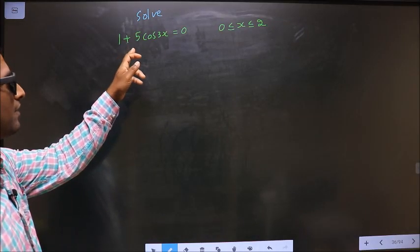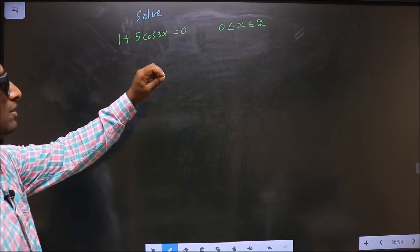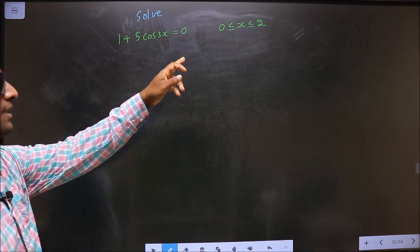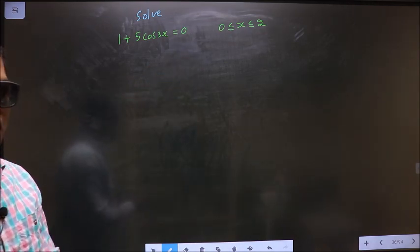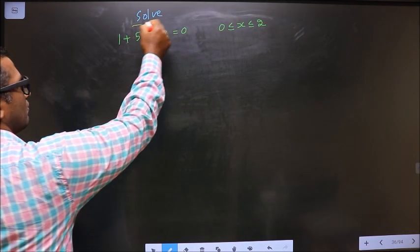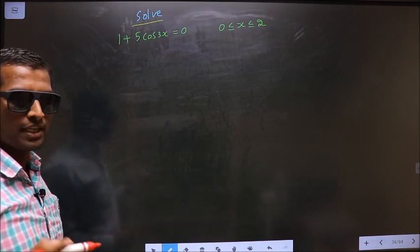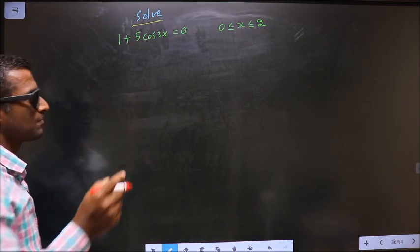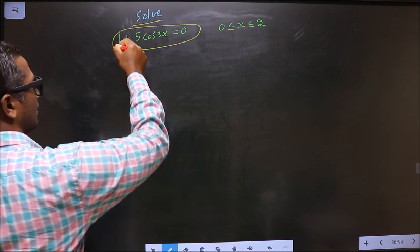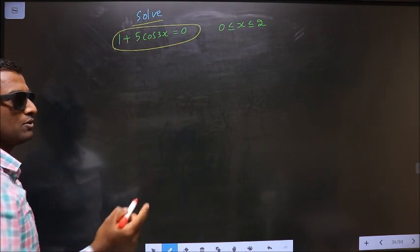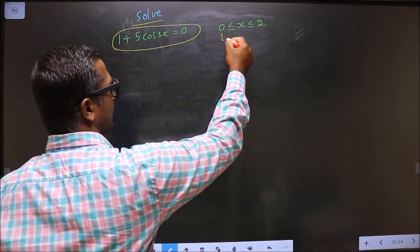Solve 1 plus 5 cos 3x equal to 0 where x lies in the interval 0 to 2π. Here they told you to solve, so you should find the values for x satisfying this equation and also it should lie in this interval.